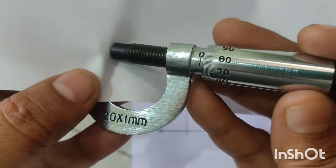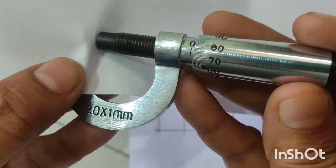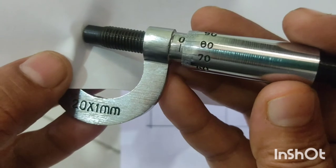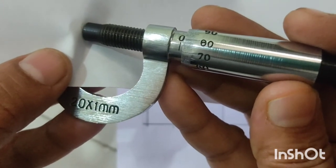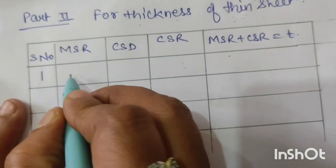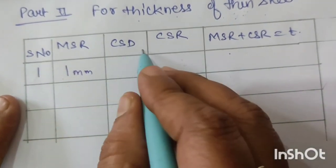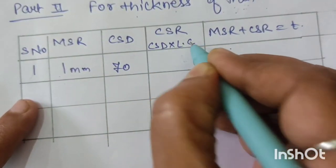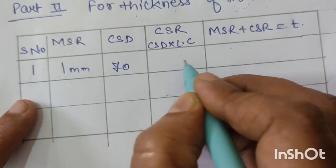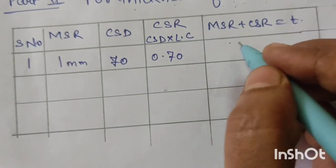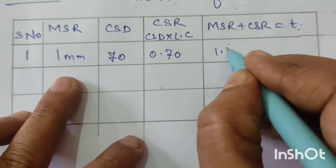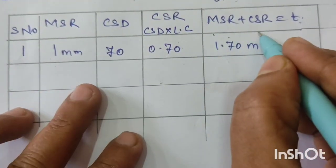For the first reading, the MSR is 1 mm and the CSD is 70. CSR = 70 × 0.01 = 0.70 mm. Total reading (thickness) = MSR + CSR = 1 + 0.70 = 1.70 mm.